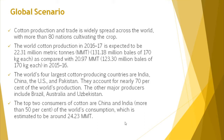This is compared with 20.97 million metric tons in 2015-16. The world's four largest cotton producing countries are India, China, the USA, and Pakistan, accounting for nearly 70% of world production. Other major producers include Brazil and Australia. More than 50% of the world's consumption is estimated to be around 24.23 million metric tons.